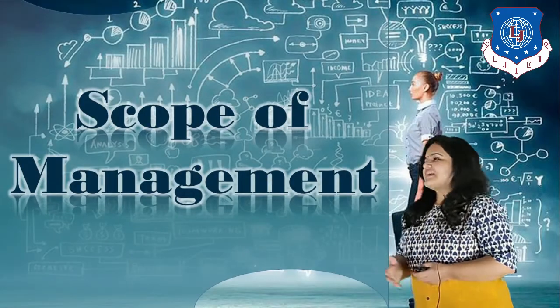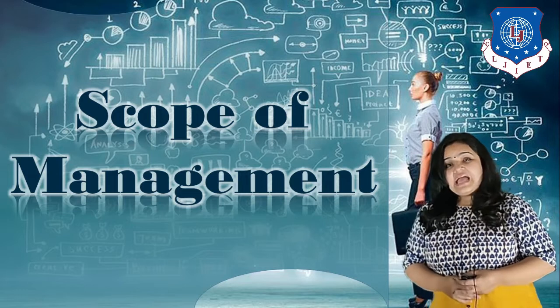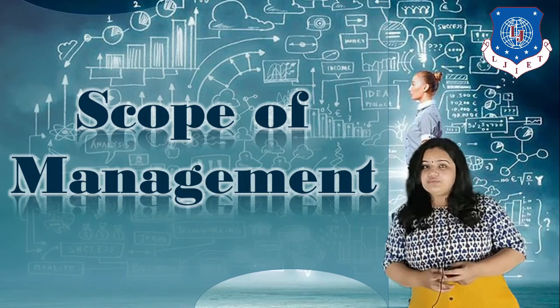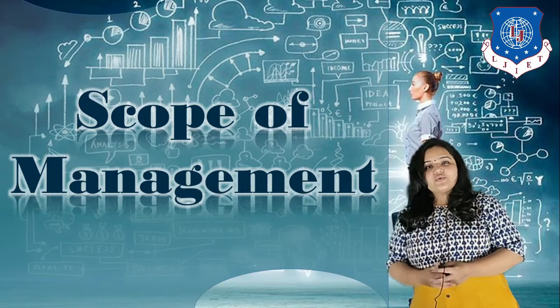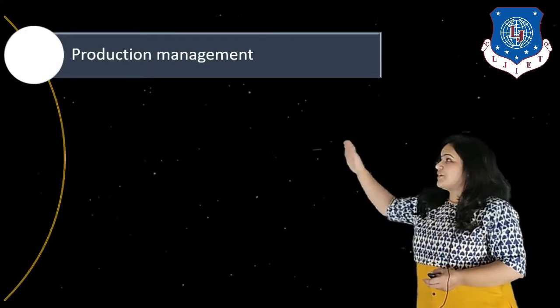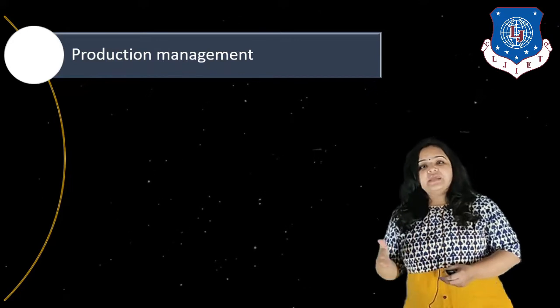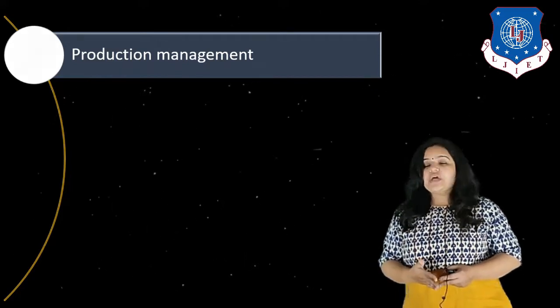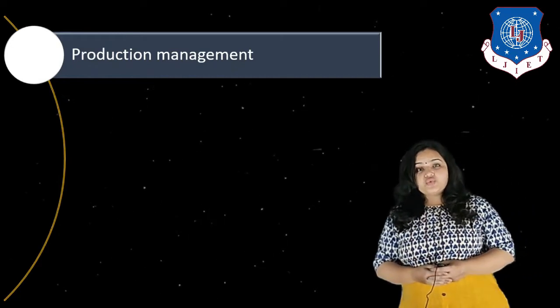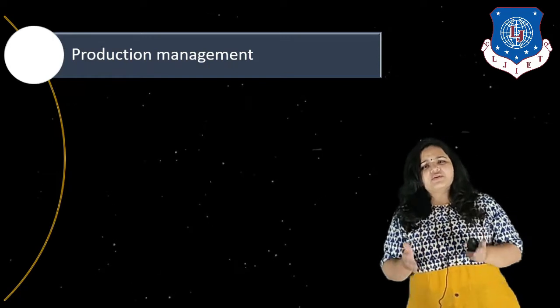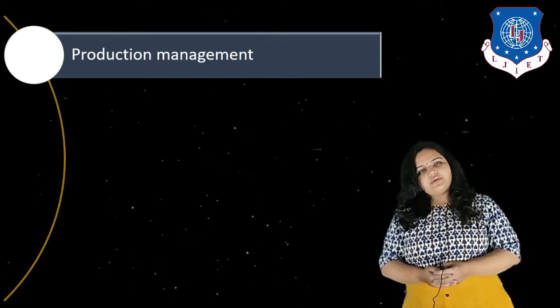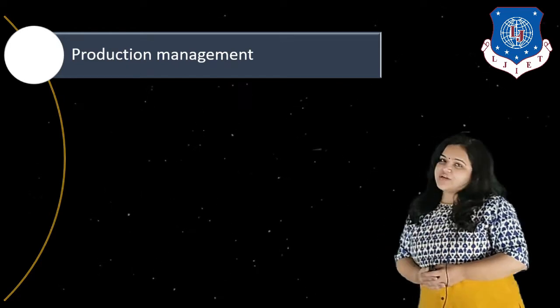Let us now understand which are the different fields where management is applicable — the scope of management. The scope of management can be given fourfold. The first area is production management, where management needs to take care of production in an organization: how many units are produced, at what price, what will be the best production methodologies, which technology to use, how many workers to hire, and what materials to use.